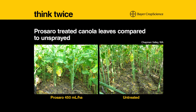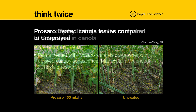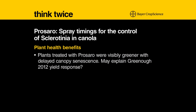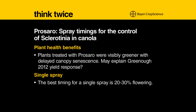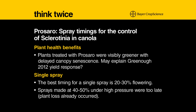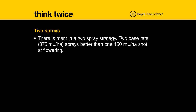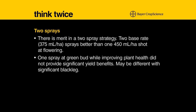We seem to hold a few more leaves for a little bit longer in the canopy, and maybe that helps a little with fill. For the single spray, we know that 20 to 30 percent flowering is our sweet spot. When we get out to 40 or 50 percent, it's too late. There's some merit — and I'm only saying merit because we need to prove it — in a wet year with two sprays for sclerotinia.